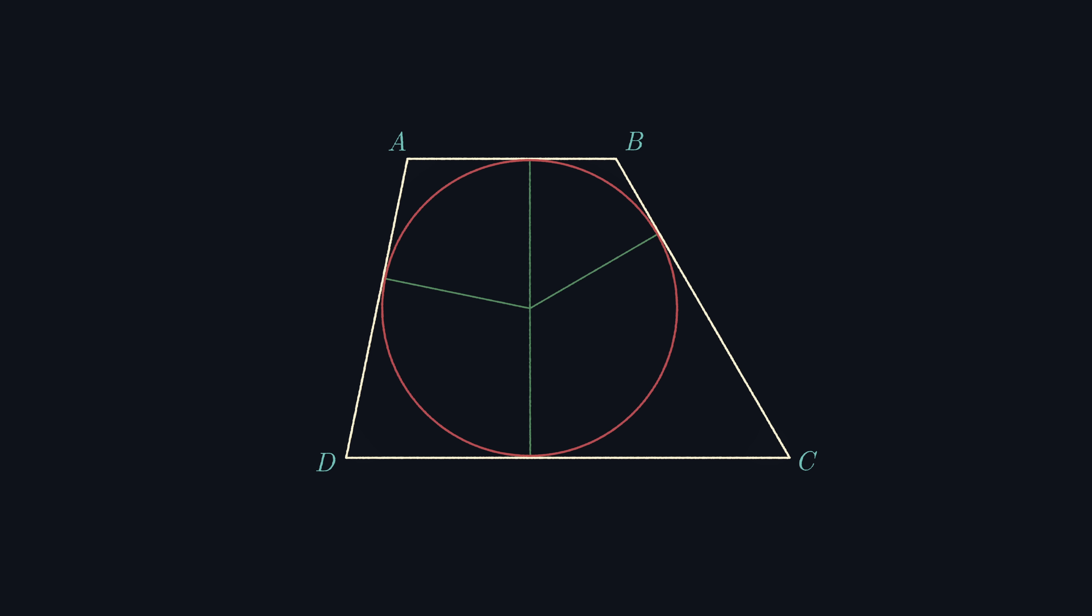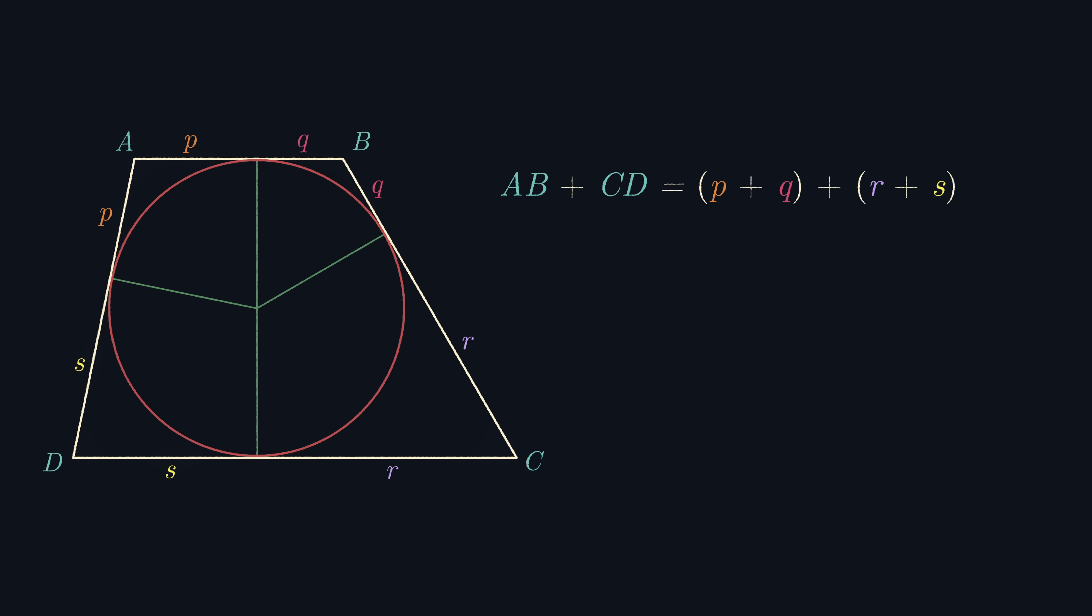So we can label some of these side lengths as P, Q, R, and S as shown. It follows that AB plus CD equals P plus Q plus R plus S, but AD plus BC equals P plus S plus Q plus R, which also equals P plus Q plus R plus S.